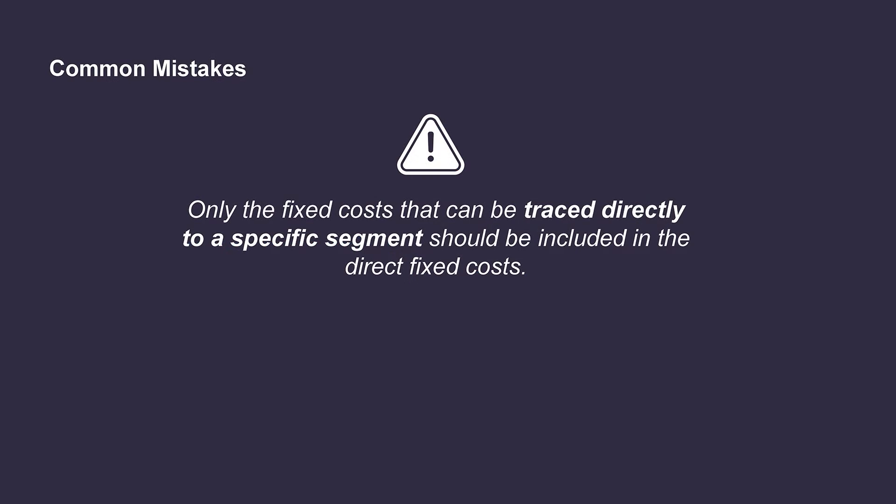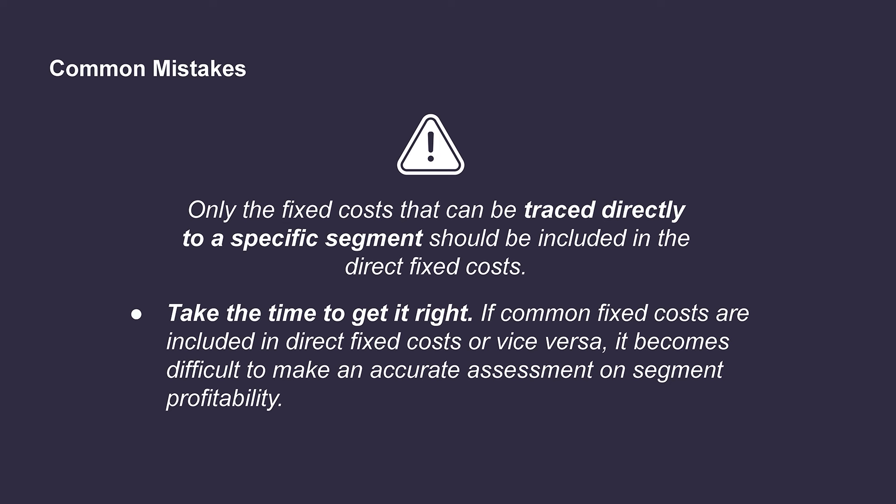Companies need to be careful when separating out direct and common fixed costs. Only the fixed costs that can be traceable directly to a specific segment should be included in the direct fixed costs. This is a common place where mistakes are made in the preparation of the segmented income statement, since it can be difficult to factor in all of the fixed costs. Even though this can be a time-consuming process, it's very important that companies spend time on this step in order to produce a result that is accurate and useful. If common fixed costs are included in the direct fixed costs, or vice versa, it'll be difficult for management to make an accurate assessment on the profitability of that segment.